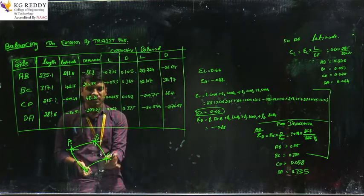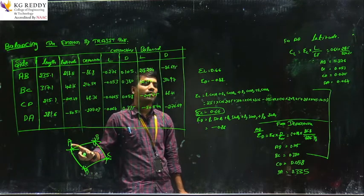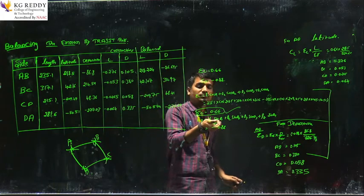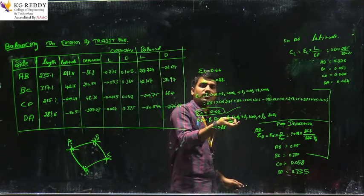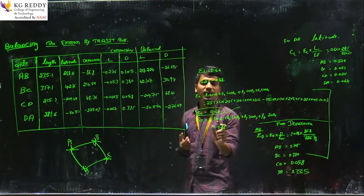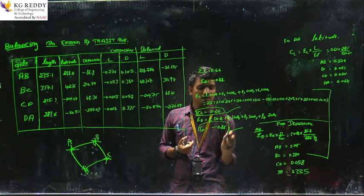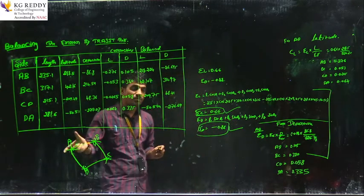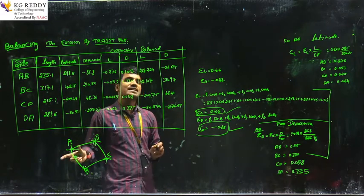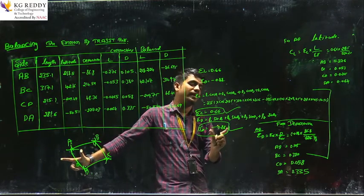So the total error over lines A to B, B to C, and C to D — the total error in latitude is 0.66. Next, instead of cos θ you write sin θ: L1 sin θ1 plus L2 sin θ2 plus L3 sin θ3 plus L4 sin θ4. After putting in the values, sigma D equals minus 0.88, which is the sigma departure of that traverse. So the sigma departure of the line traverse is 0.88.